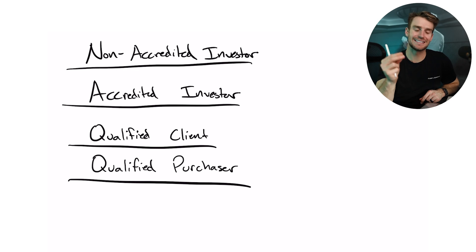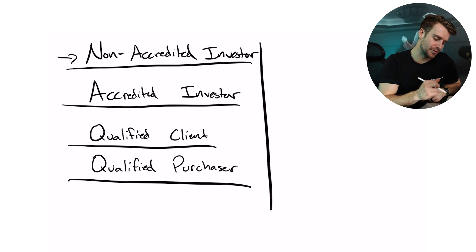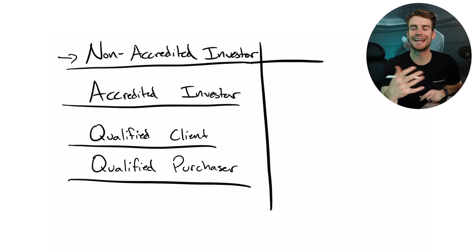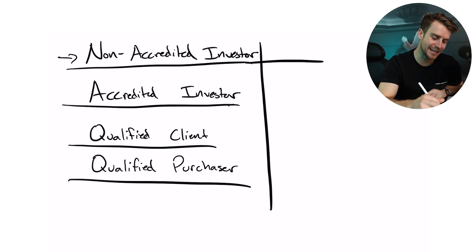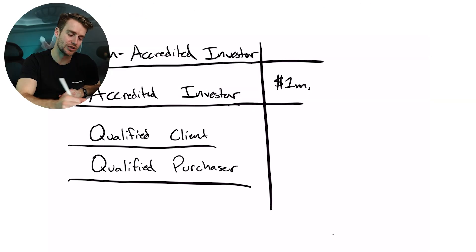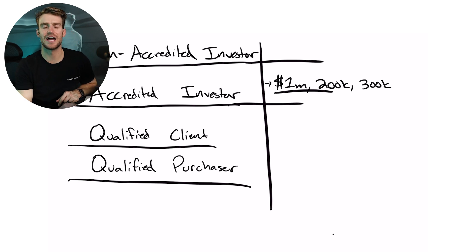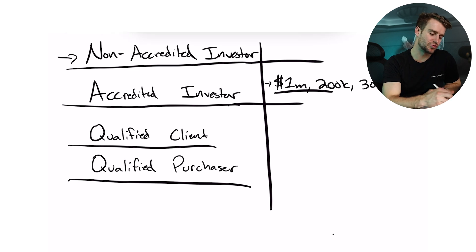Who invests in these funds? The SEC qualifies four types of investors. Number one is a non-accredited investor — just a regular person who doesn't fit other categories. Number two is an accredited investor — someone with a million-dollar net worth excluding their home, or who makes two hundred thousand a year, or three hundred thousand with their spouse. Recently, having a license to sell securities also qualifies you. Most funds by SEC rules require accredited investors or above because the SEC, established in the 1930s after the Great Financial Crash, wanted to protect small investors.